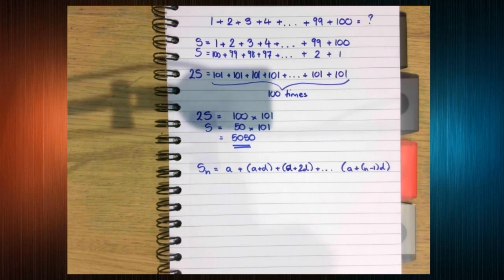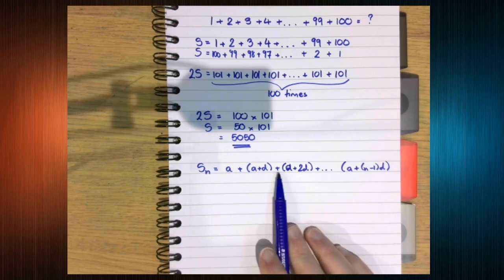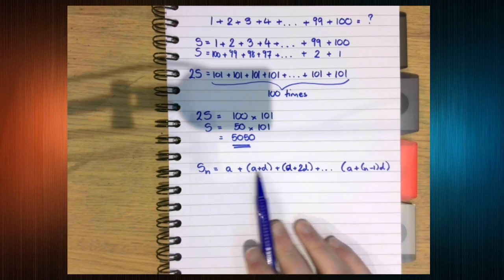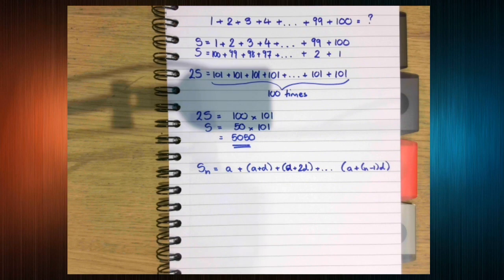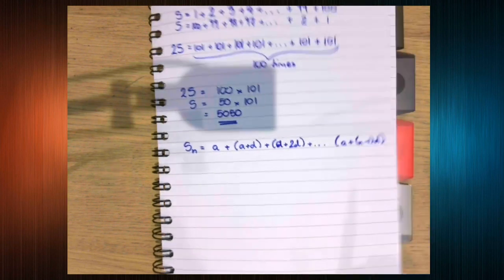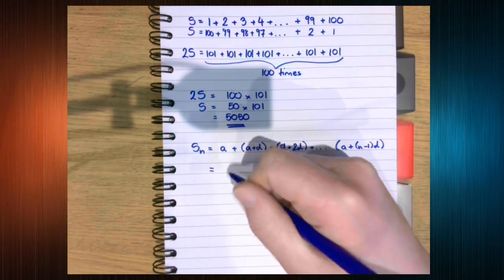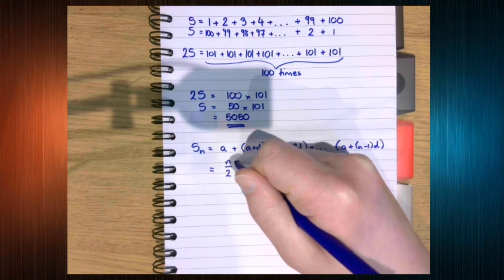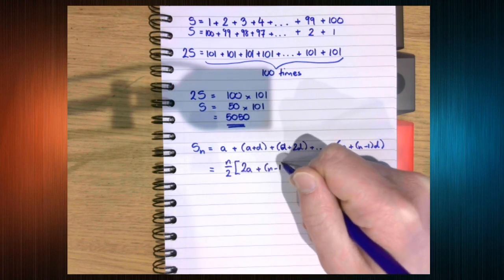This is the most general arithmetic series. We have the first term a. The second term is that plus the common difference d. The third term is that plus the common difference. We're going to go back to the workbook page and we're going to have a look at question 2. Because we are going to prove that this is equal to n over 2, 2a plus n minus 1, d.